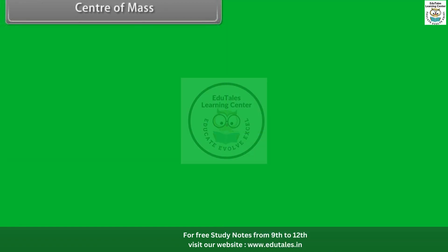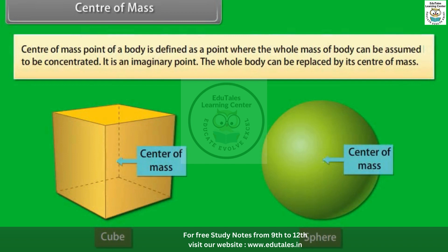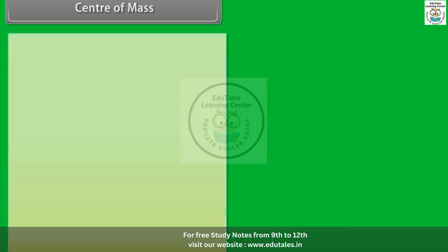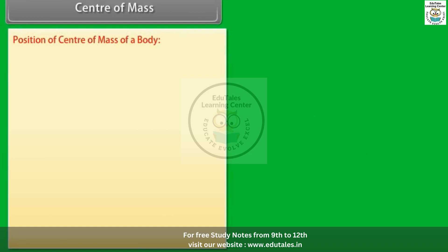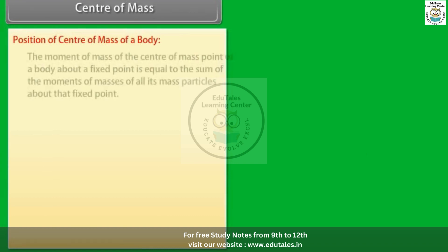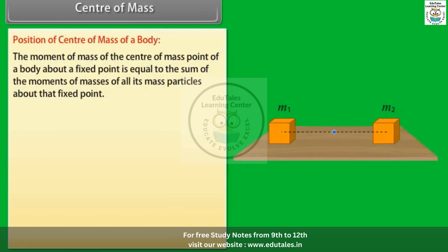The center of mass of a body is defined as a point where the whole mass of the body can be assumed to be concentrated. It is an imaginary point. The whole body can be replaced by its center of mass. The moment of mass of the center of mass point of a body about a fixed point is equal to the sum of the moments of masses of all its mass particles about that fixed point.